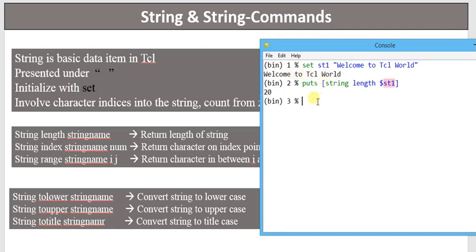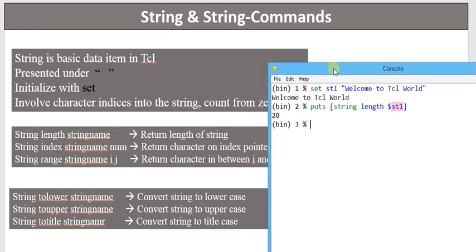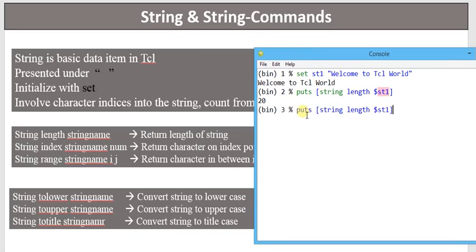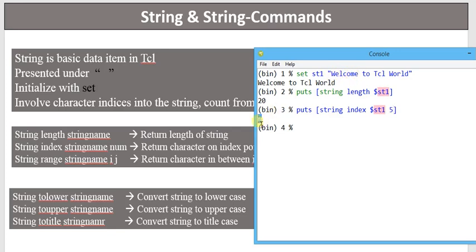The second command is `string index`. The syntax is `string index string_name number`, and it returns the character at the index pointed to by the given number. For example, `string index $st2 5` — indexing starts from zero, so 0, 1, 2, 3, 4, 5 — the character at the fifth index will be returned as output.